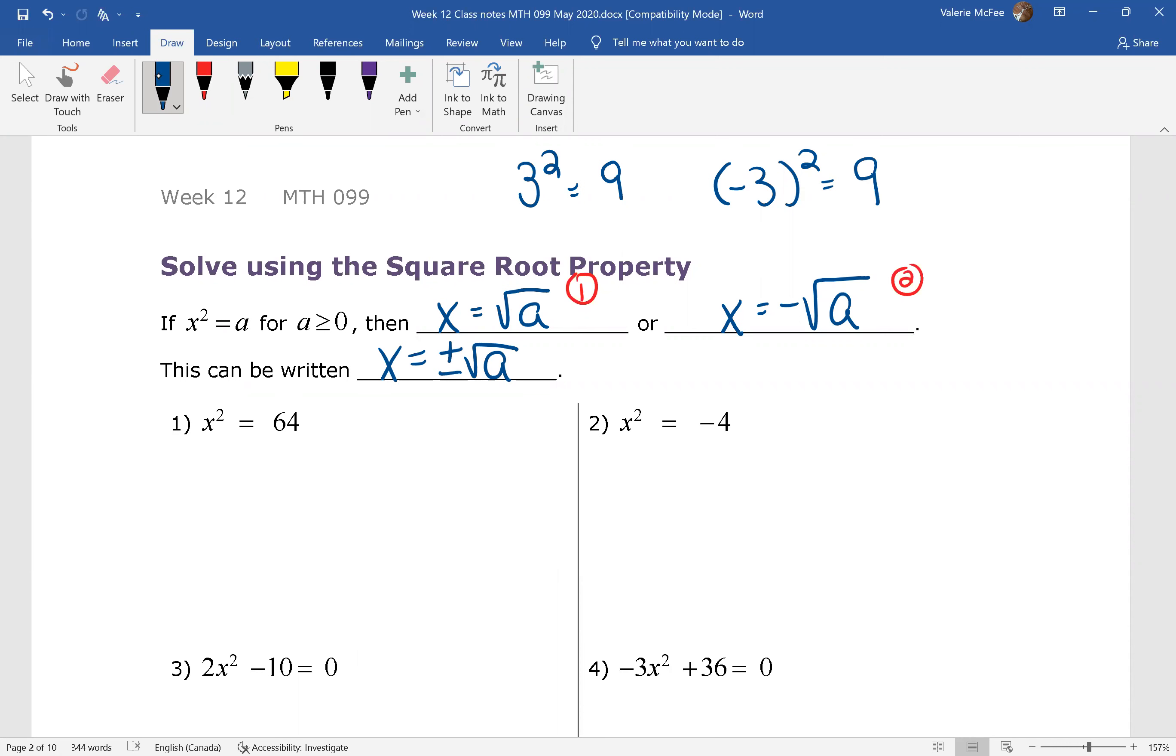So look at question one. x squared equals 64. We're going to use what I've written on top here and say that means that x equals the square root of 64 or x equals the negative square root of 64. So x might be 8 or negative 8.